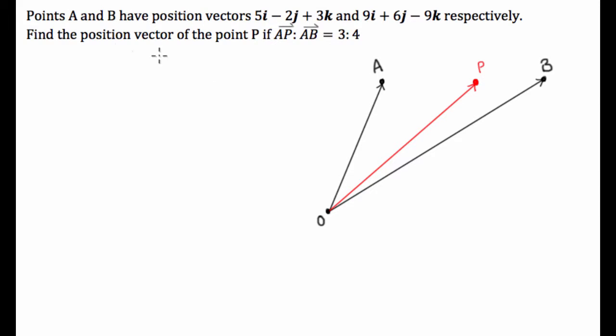So what we have is we have points A and B with position vectors 5, negative 2 and 3, as well as 9, 6 and negative 9.